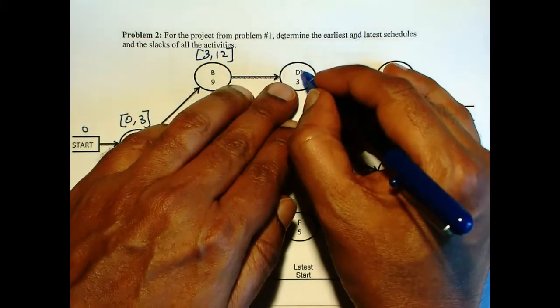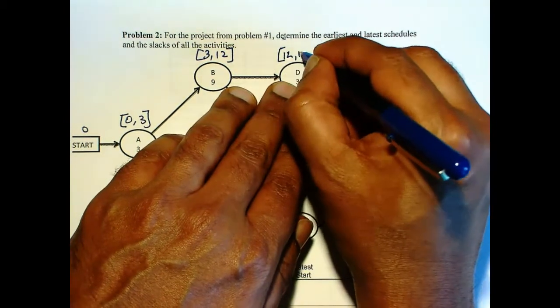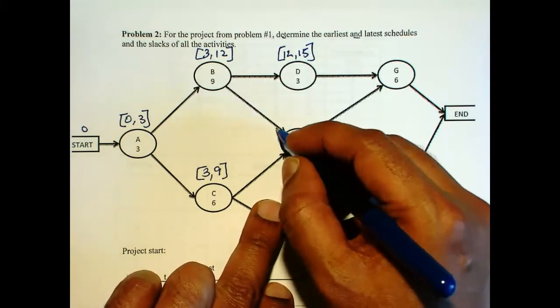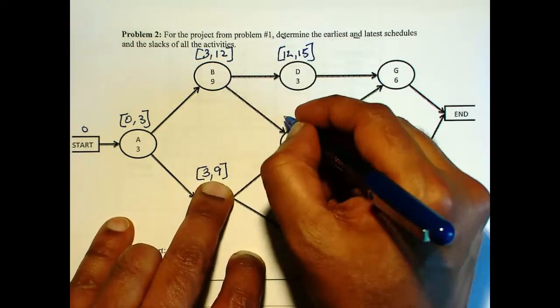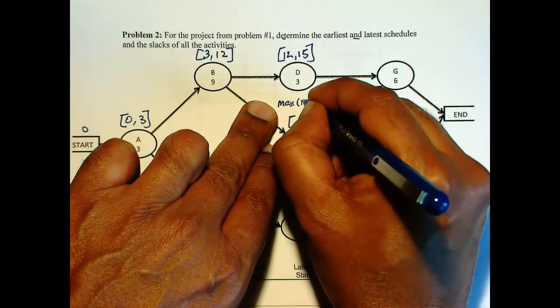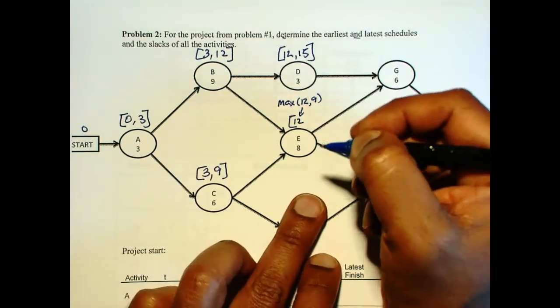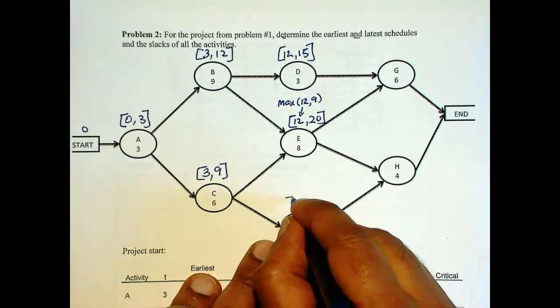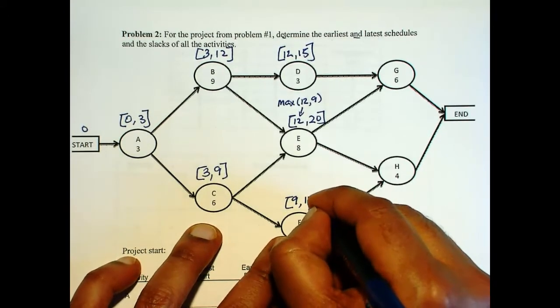And here, only one arrow coming in. So 12 plus 3 is 15. Here, there are two arrows coming in. So we have to look at 12 and 9, and take the larger value. Plus 8 is 20. Here, there's only one arrow coming in. So 9 plus 5 is 14.